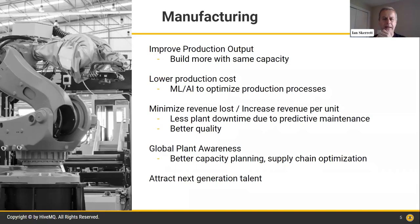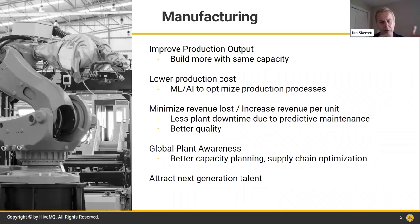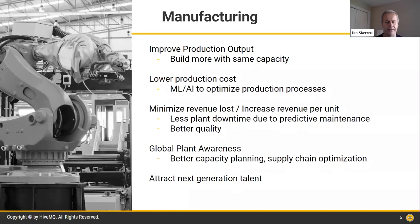There are about five main drivers we see repeatedly when we talk to manufacturing clients. First, they're trying to use data from their factory floor to improve production output — getting more capacity through the same facilities. Similarly, they're trying to lower production costs by aggregating and integrating data from different pieces of equipment to optimize production processes.